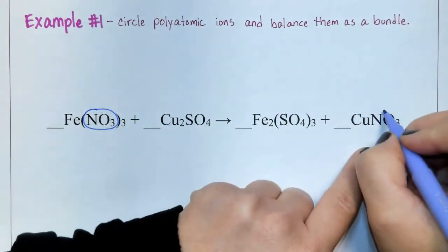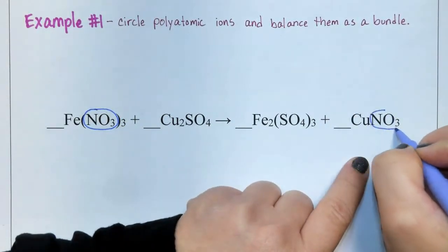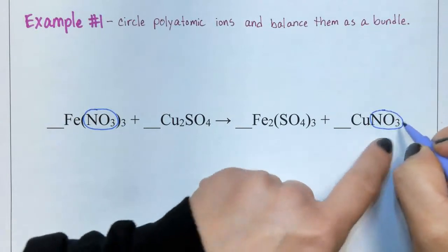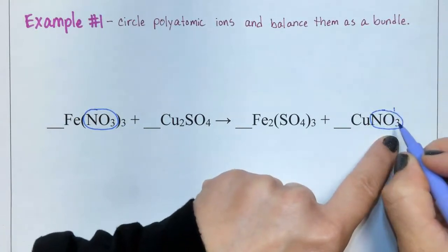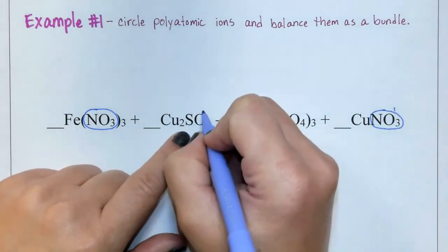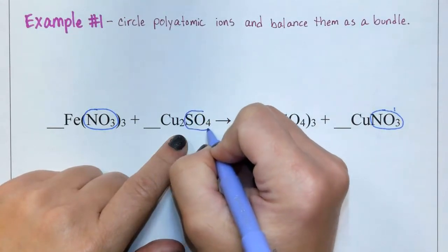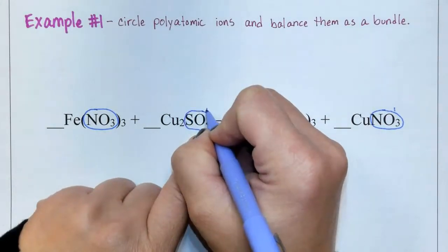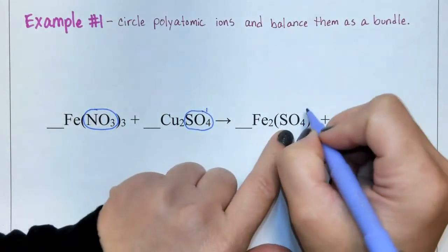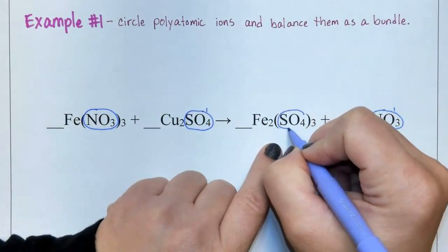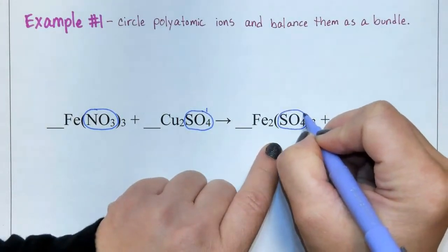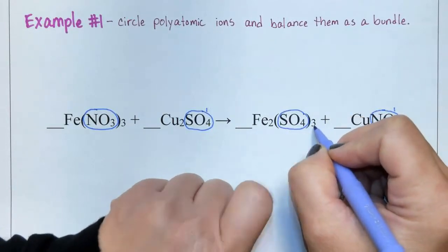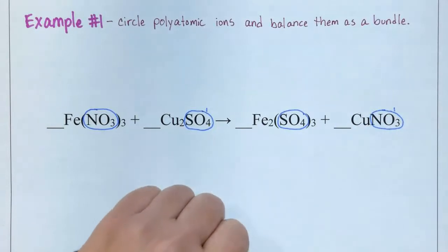On the right side, here's nitrate, NO3, and notice it has no parentheses, so we only have one nitrate on the product side. On the left, we have SO4, which is sulfate, and there's only one sulfate on the left. As opposed to on the right-hand side, the product side, we have sulfate, but since it's in parentheses with a three, there are three sulfates on the right side.